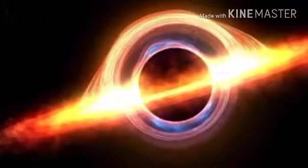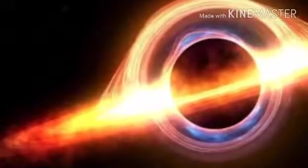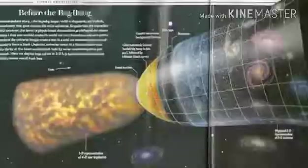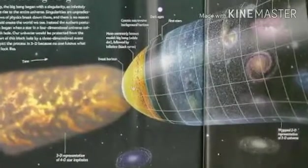The basic idea is that whenever a singularity forms in the universe, it will always be hidden away behind a black hole's event horizon, which means the laws of physics around the black hole can continue to function as normal.